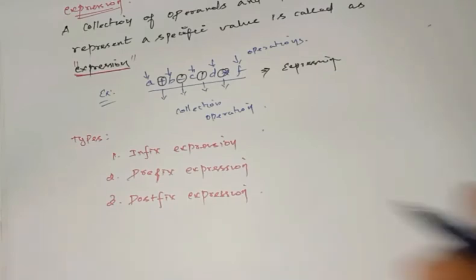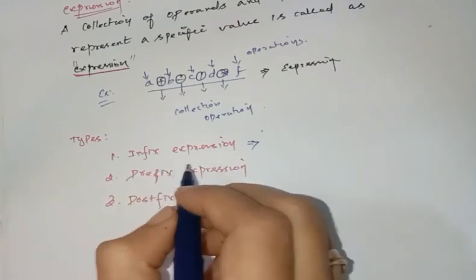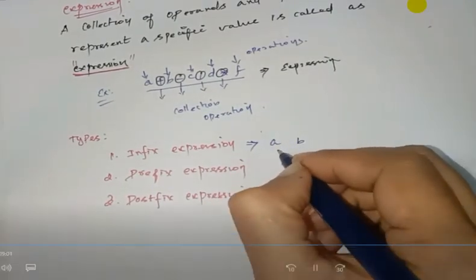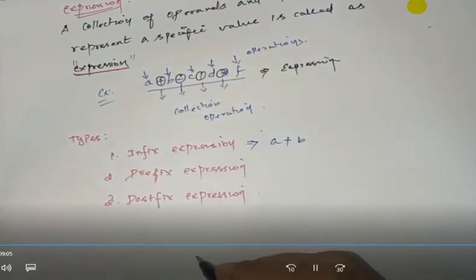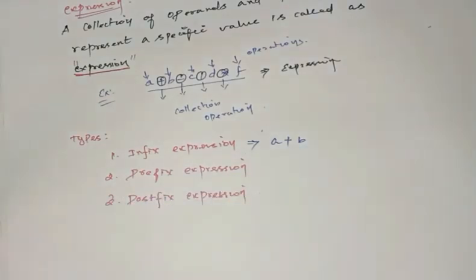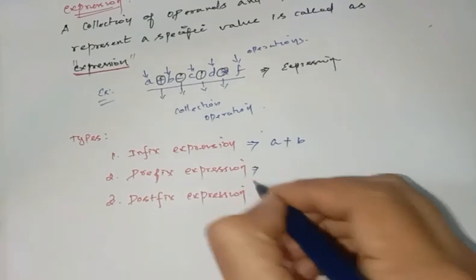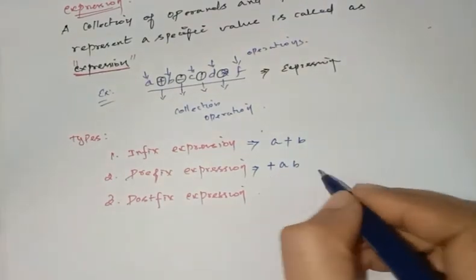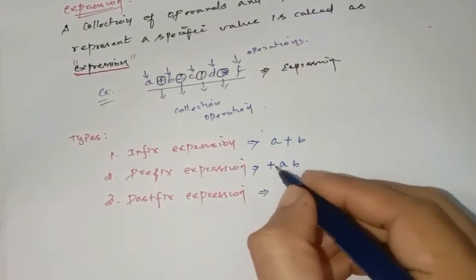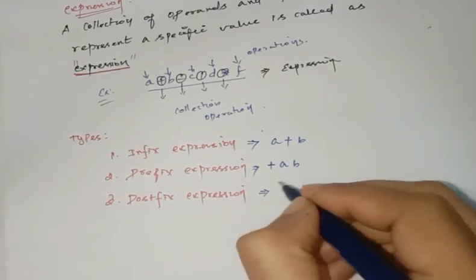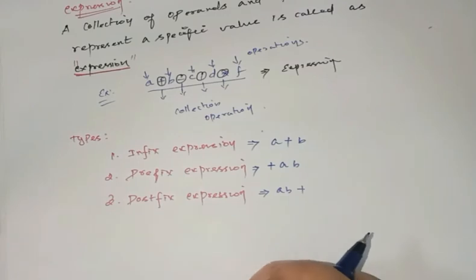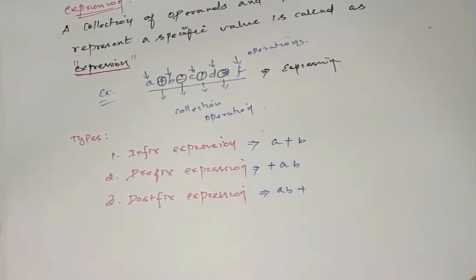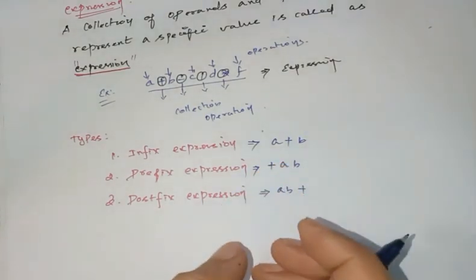In the expressions concept, there are three kinds and this is very easy. Infix expression: the operator is placed between two operands — for example, A plus B. Prefix expression: the operator is placed before the operands — for example, plus A B. Postfix expression is the opposite of prefix — the operator is placed after the operands — for example, A B plus. This is a simple expression and we can convert between these forms.